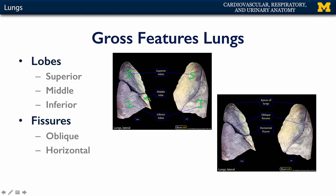These lobes are separated by fissures. There is an oblique fissure that separates the inferior lobe from both the superior and middle lobes on the right, and on the left lung, the oblique fissure separates the superior from the inferior lobe. If a middle lobe is present, such as on the right lung, there's also typically a horizontal fissure which separates that middle lobe from the superior lobe.